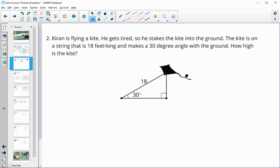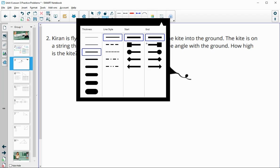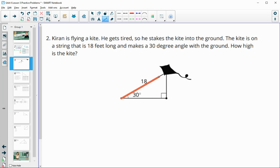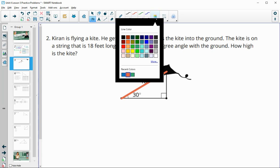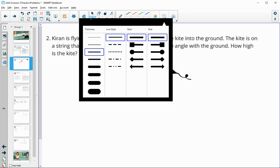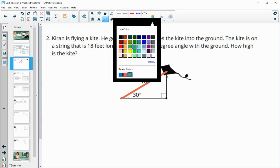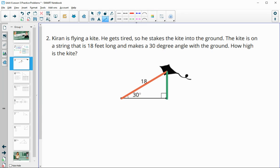Number two, Kieran is flying a kite. He gets tired, so he stakes the kite in the ground. The kite is on a string that's 18 feet long, so we see that string here at 18 feet long, and that string makes a 30-degree angle with the ground. So how high is the kite? We're wanting to find this side here.